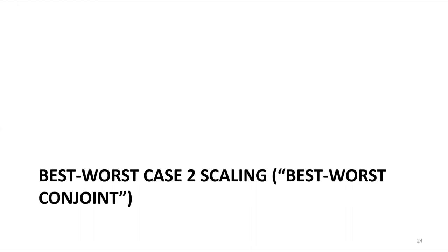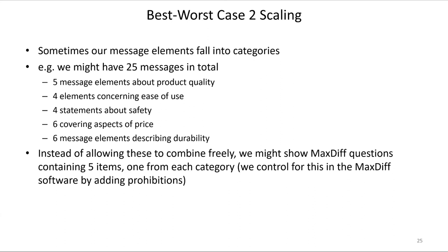A close relative of max diff is best worst case two scaling. My colleague Aaron Hill will be presenting on this at our next webinar in June and will show how to do it in the software. For messaging purposes, we use it when message elements fall into categories — say, 25 messages total: five about quality, four about ease of use, four about safety, six about price, and six about durability. Instead of allowing these to combine freely, we show max diff questions containing just five items each, one per category, using prohibitions to control this in the software.